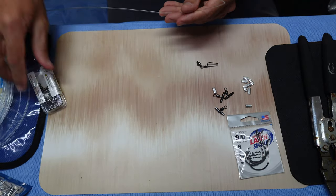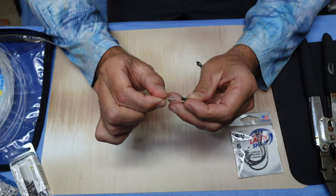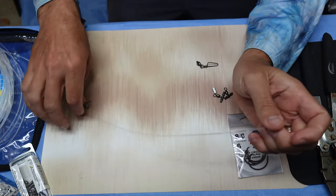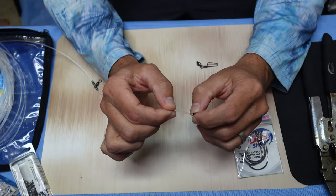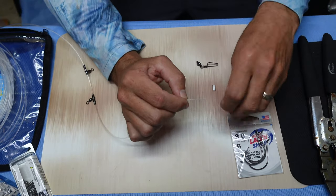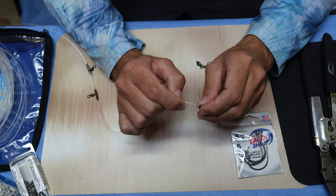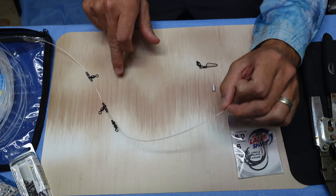First thing I do is I'll slide on all of my swivel sleeves first. I put all my components on first before I actually cut the length of the rig because I don't really like to waste any of this leader. It's not cheap so this is the way I do it and I found this is the best way to do it. I'm sliding all three sleeves on.